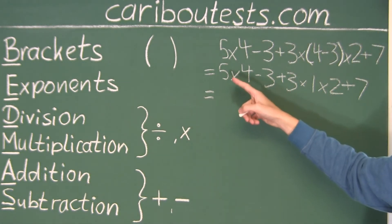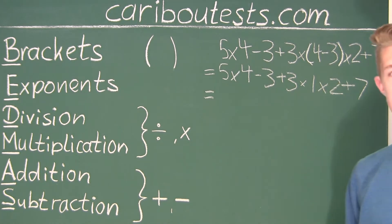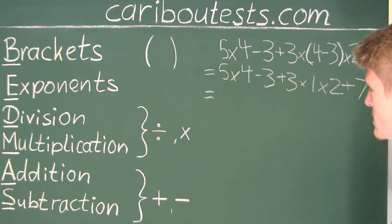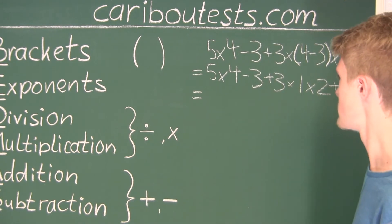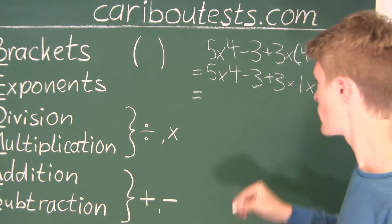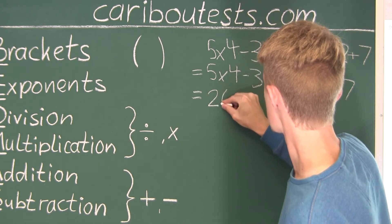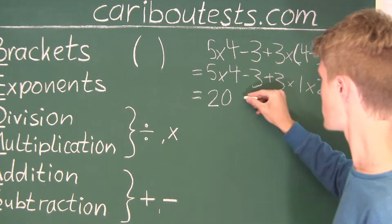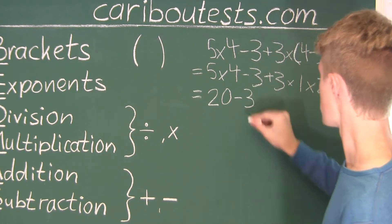Oh, here we see we have 5 times 4, and we also have 3 times 1 times 2. So, now, let's simplify those. So, first, since we will just do them from left to right as we see them, we will first do 5 times 4. So, 5 times 4 is 20. And then, we still have minus 3.